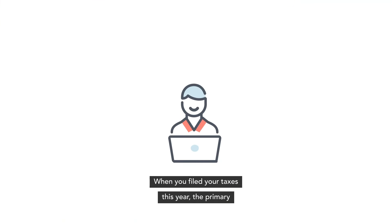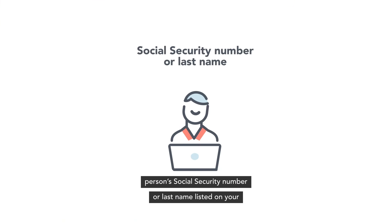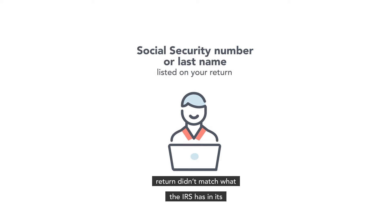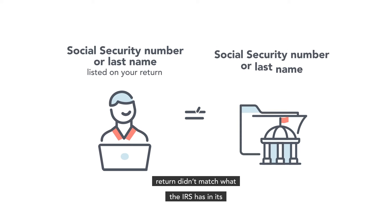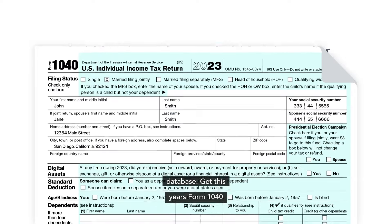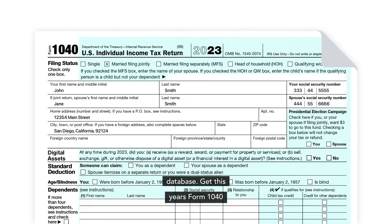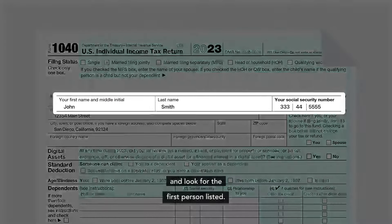When you filed your taxes this year, the primary person's Social Security number or last name listed on your return didn't match what the IRS has in its database. Get this year's Form 1040 and look for the first person listed.